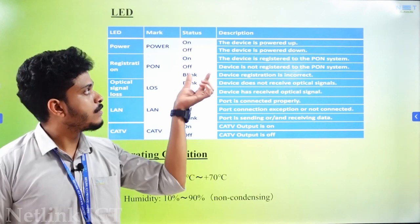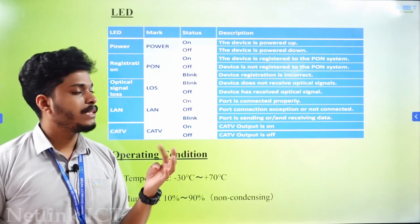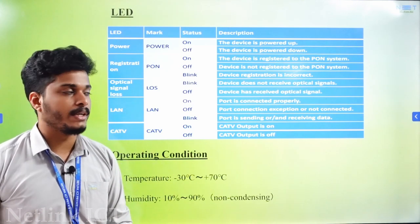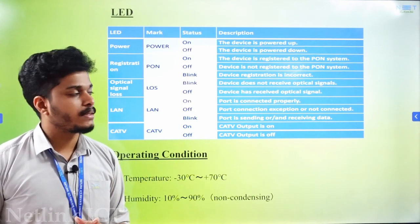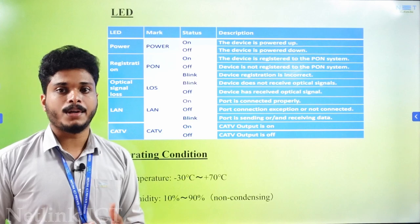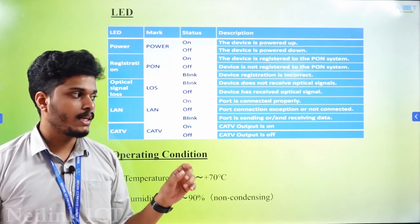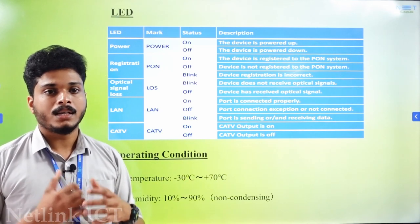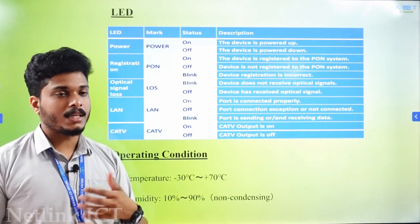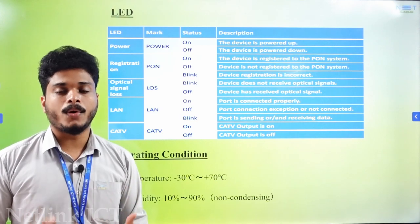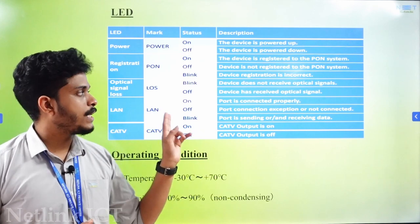The PON system has three states: OFF, BLINK, and STABLE. If the PON light is STABLE, it means the ONU is successfully registered to the OLT. If it is OFF, the PON light indicates no fiber connection or no proper power. If it is BLINKING, it is not yet registered.